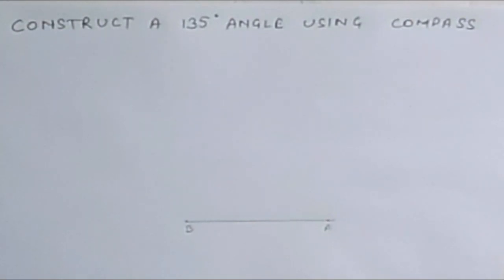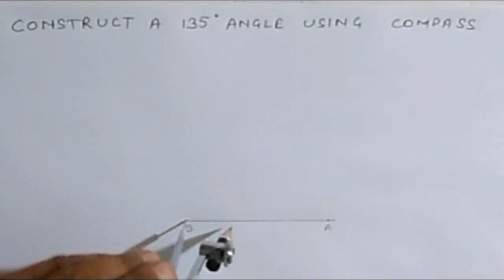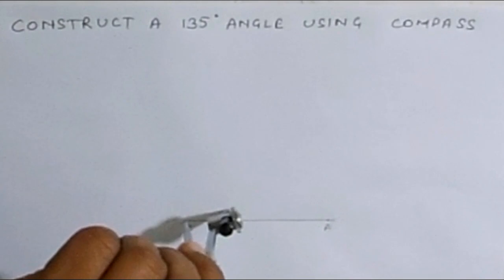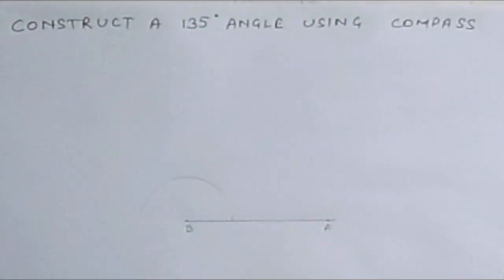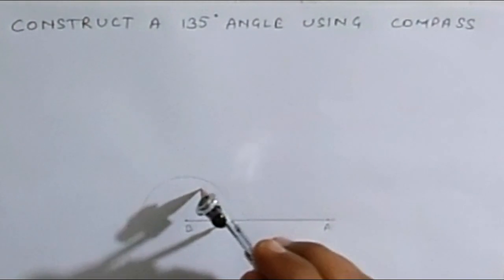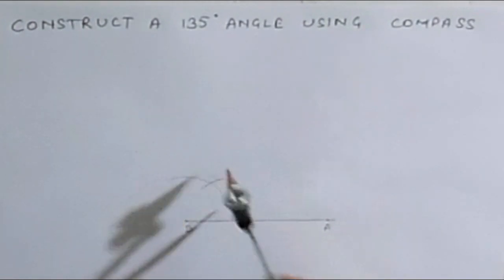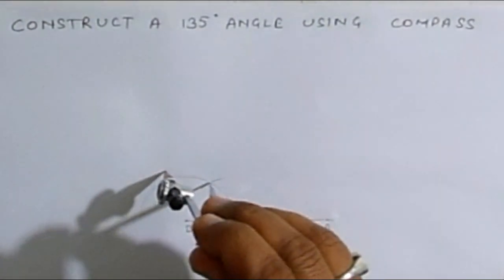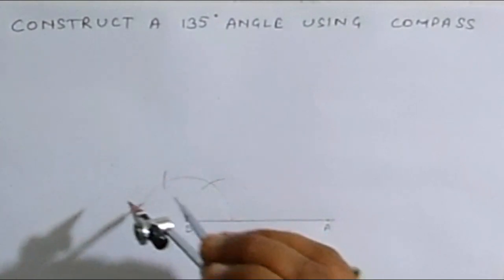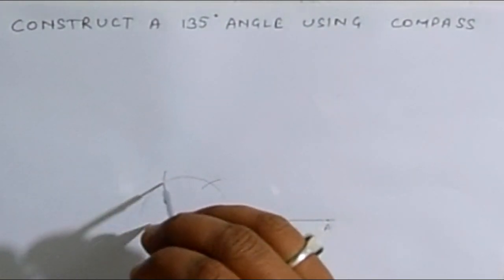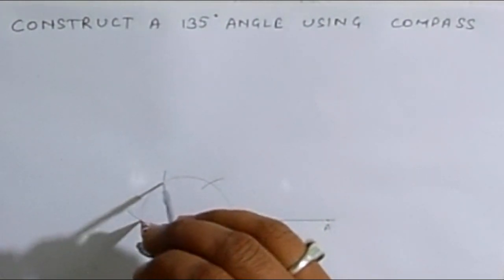Now from point B, draw a half circle. Make a cut. This makes 60 degree angle. This makes 120. And 180.